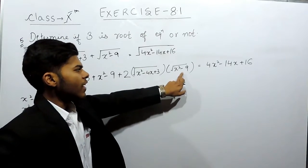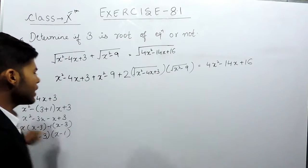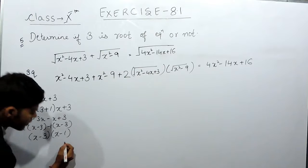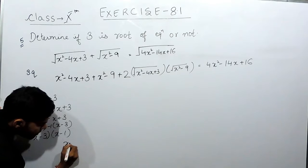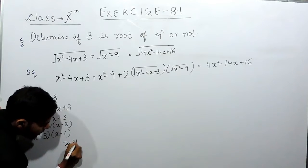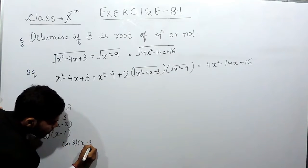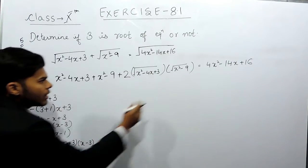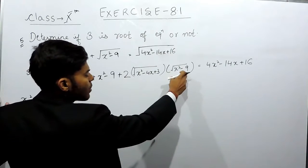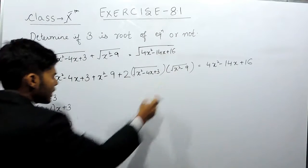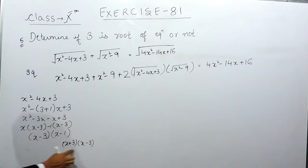Now the factors of x² minus 9 will be (x plus 3) and (x minus 3), because this is a difference of squares — a² minus b² equals (a plus b)(a minus b).